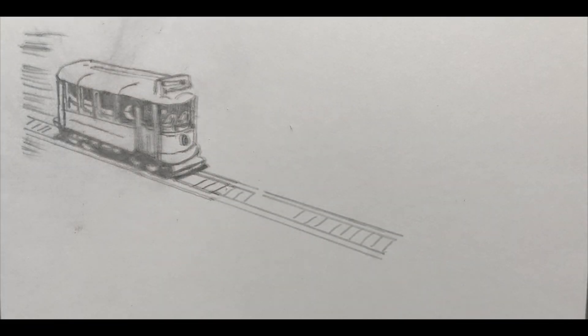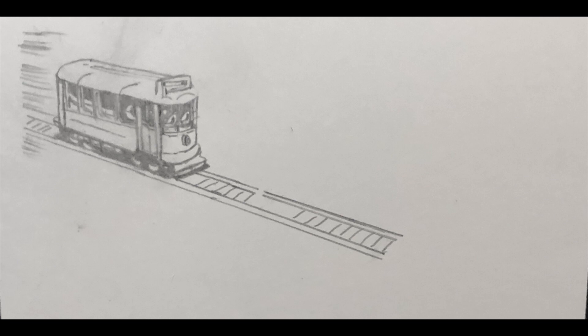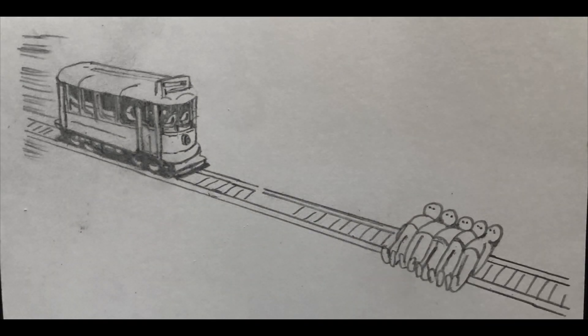There is a runaway trolley barreling down the railway tracks. Ahead, on the tracks, there are 5 people tied up and unable to move. The trolley is headed straight for them.